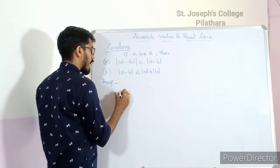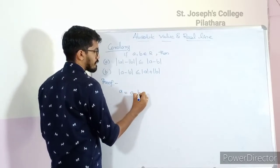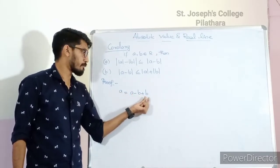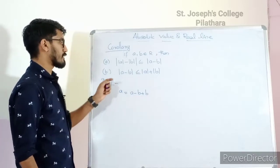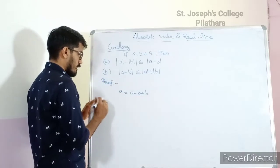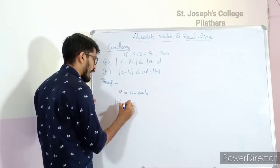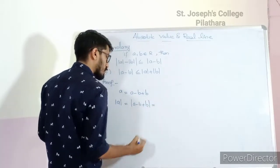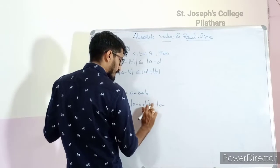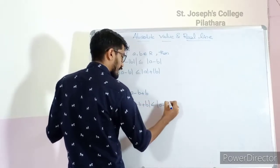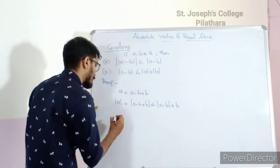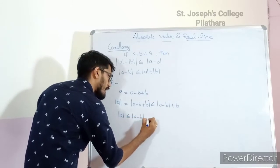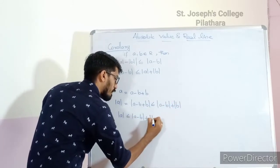We can write a = (a − b) + b. Applying the triangle inequality, we get |a| = |(a − b) + b| ≤ |a − b| + |b|.